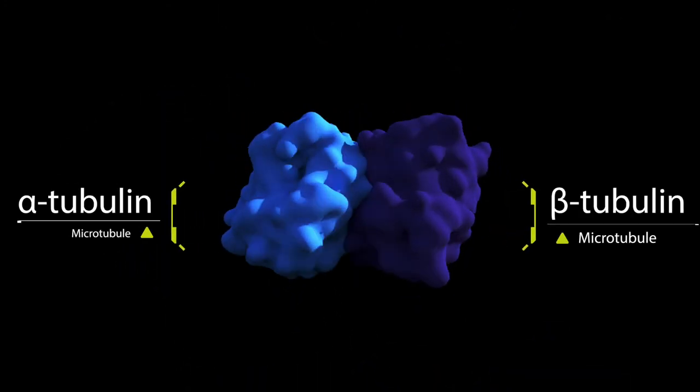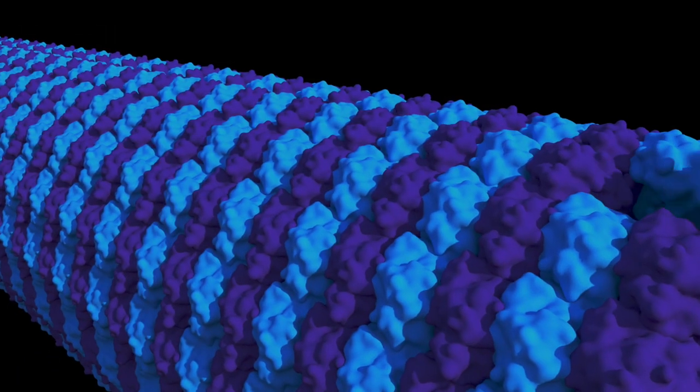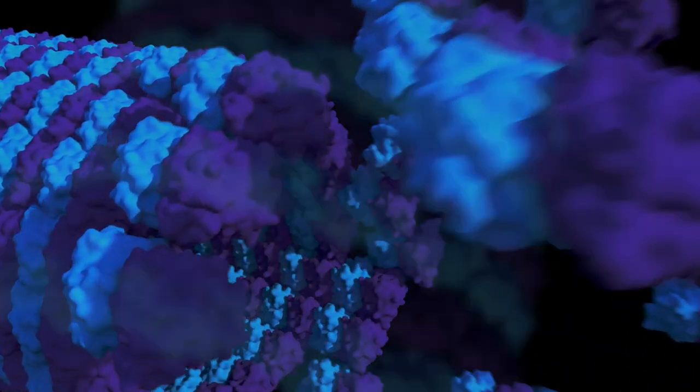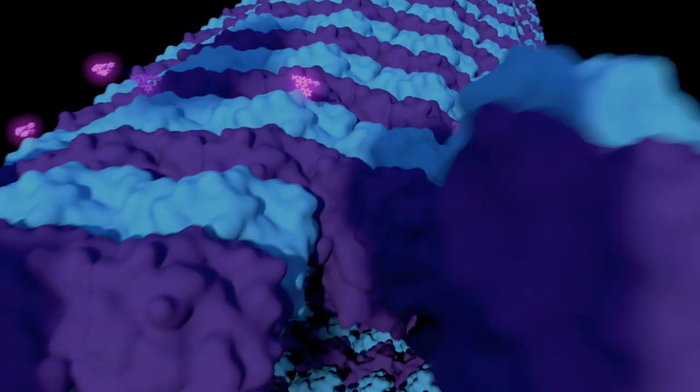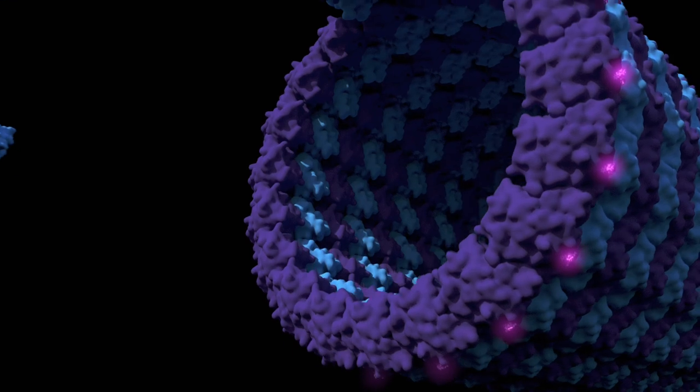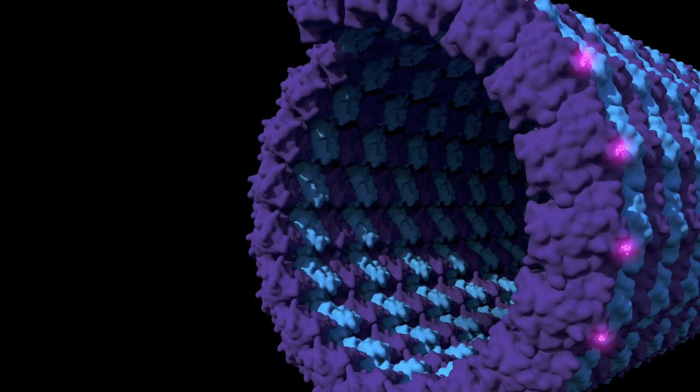Microtubules are composed of the alpha unit and the beta unit. The dynamic instability of the microtubules is essential in cancer cell proliferation. Biochemically, paclitaxel can cause mitotic arrest by binding to the beta subunits of the microtubules. This binding will suppress the depolymerization of the microtubules, consequently stopping cell division.